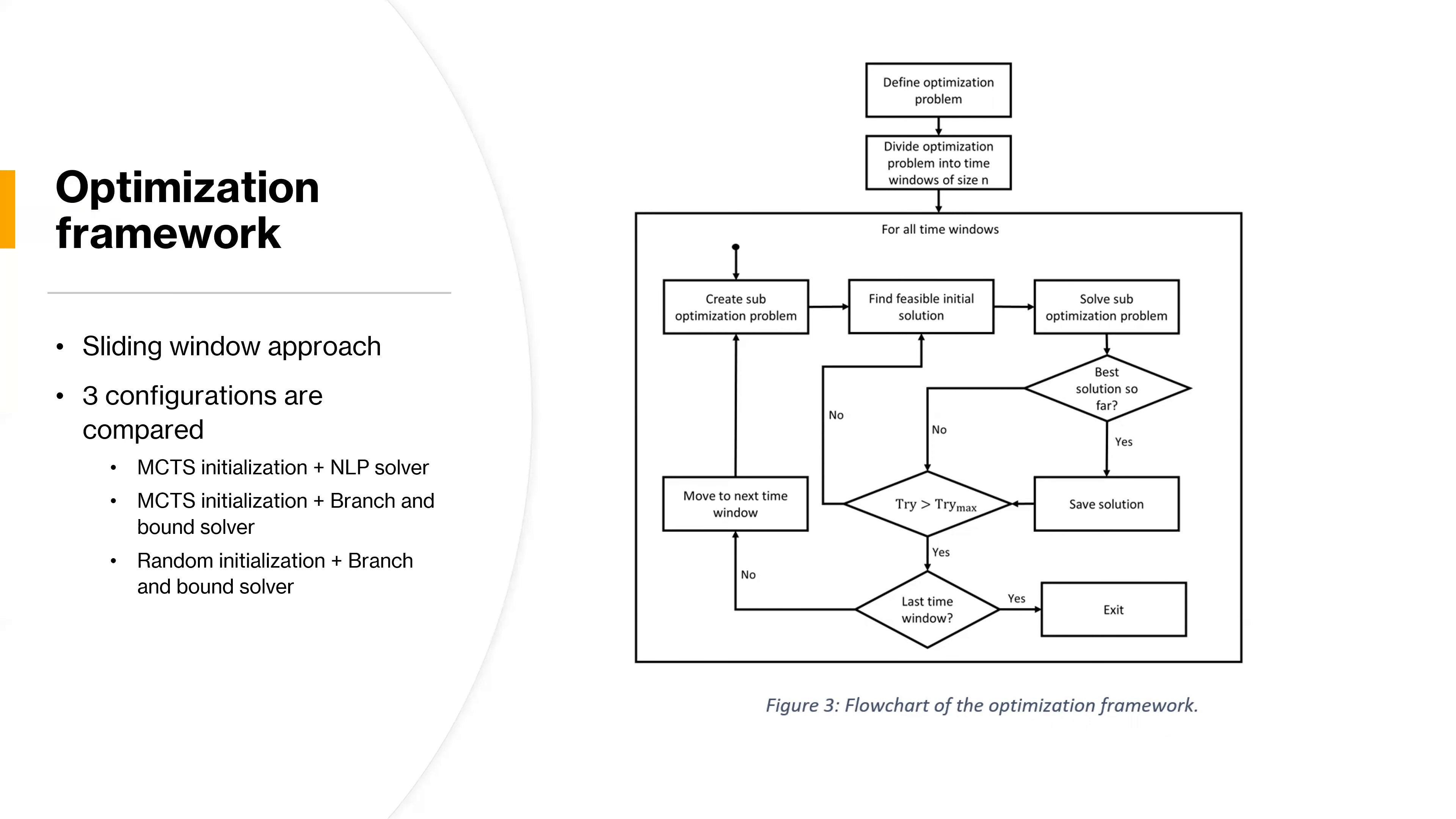So the thing here is that what we change, we basically have three different configurations for this framework. First configuration is the new initialization method that we have developed, this Monte Carlo Tree Search, and combined with a nonlinear, standard local nonlinear problem solver, that we use to solve our sub optimization problem. The second configuration is the same initialization method, but combined with a branch and bound solver, you can call it a global solver. And the final one is a random initialization procedure often used when dealing with nonconvex problems, and again, the branch and bound solver.